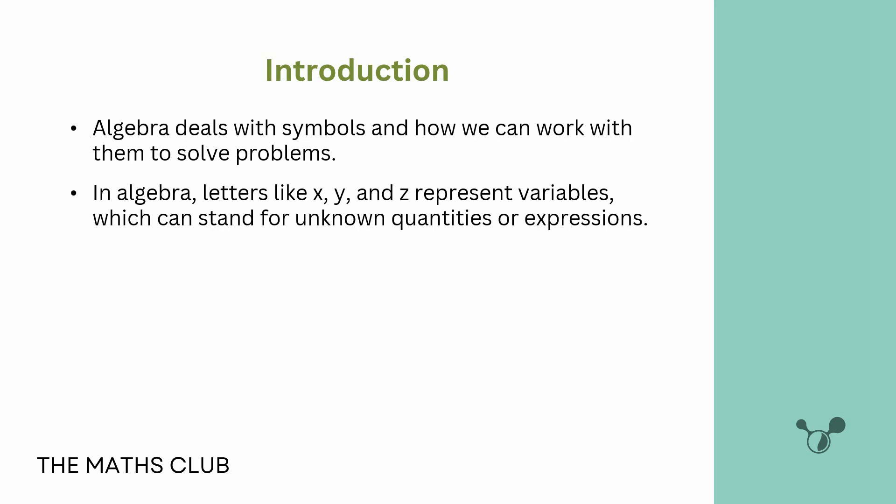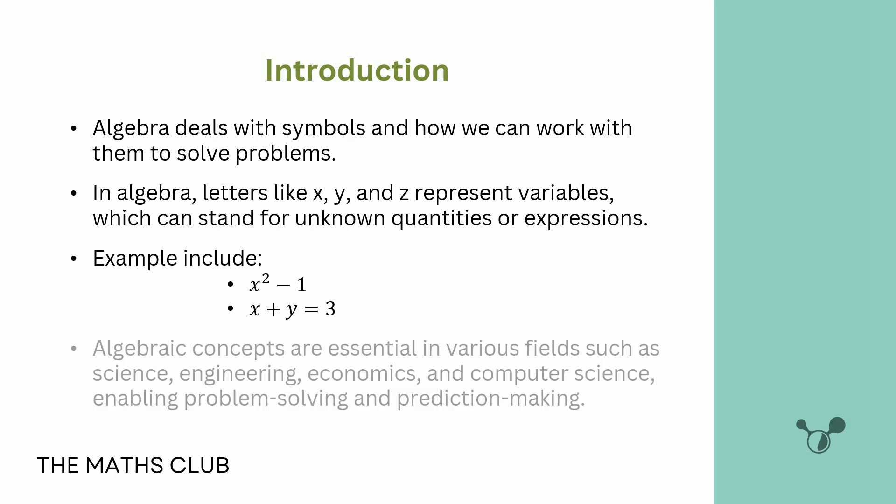So if I say something like 1 plus 3, that is not algebra — it is just a normal arithmetic expression. But when you're seeing things like x, n, a, or w, you know you're dealing with algebra. Examples include x squared minus 1, or x plus y is equal to 3.